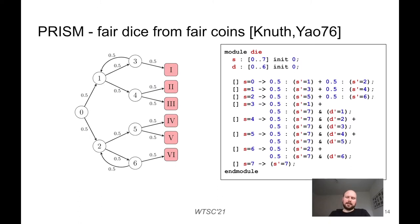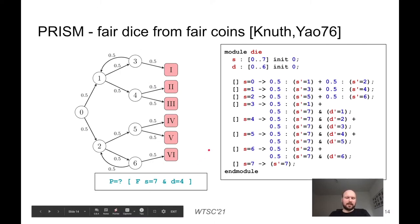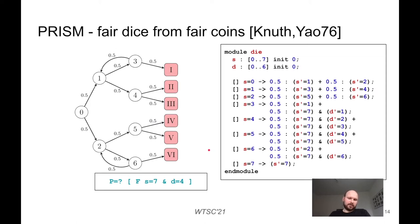On this slide we can see an example usage of PRISM. On the left-hand side we have the automaton for the Knuth and Yao algorithm from the 70s, which models fair dice using fair coins. On the right-hand side we can see the PRISM code, with two variables S and D and several commands where each command corresponds to one transition in the graph. We can define a property asking what is the probability that finally S will be 7 and D will be 4 — and PRISM responds that it's 1/6.